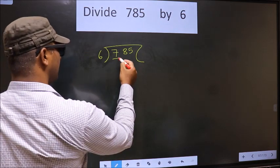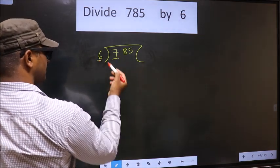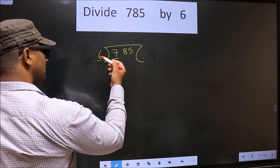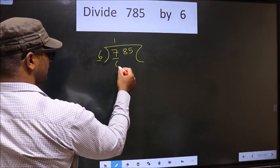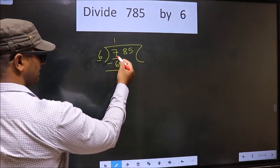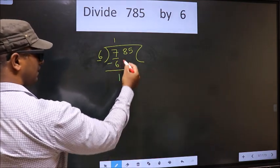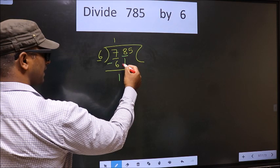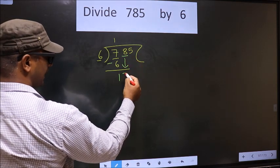Now here we have 7. Here 6. A number close to 7 in 6 table is 6 once 6. Now you subtract 7 minus 6, 1. Now you will bring down the beside number. That is 8 down.